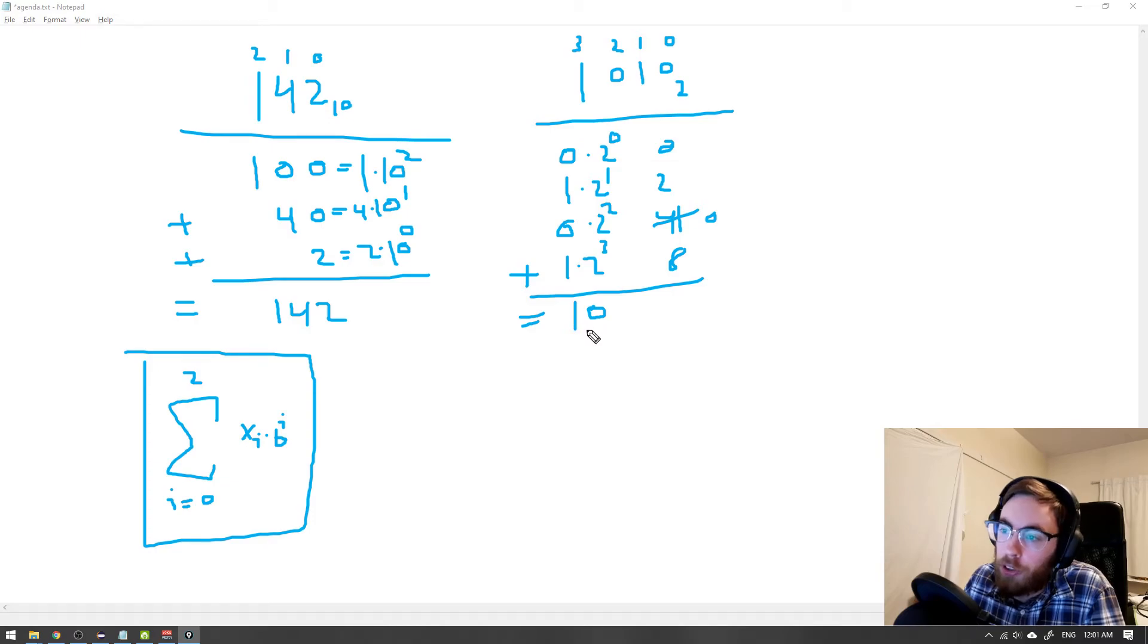So this is actually how you convert from a binary value into a decimal value. And something you may notice is that if you look at the pattern here, 0, 1, 2, 3, 4, you can see that in the 0th position, here, if you would have a 1, then you would get 2 to the power of 0, which is 1.